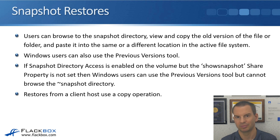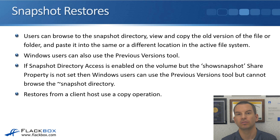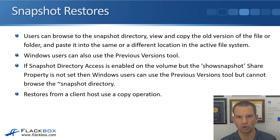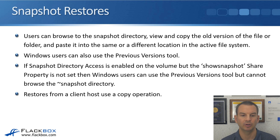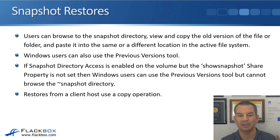Windows users can also use the Previous Versions tool, as well as browsing to the folder and dragging and dropping files from there. You'll see how the Previous Versions tool works and how all the different restore options work when you see the lab demo later. If snapshot directory access is enabled on the volume but the show snapshot share property is not set, then Windows users can use the Previous Versions tool, but they cannot browse to the tilde snapshot directory.